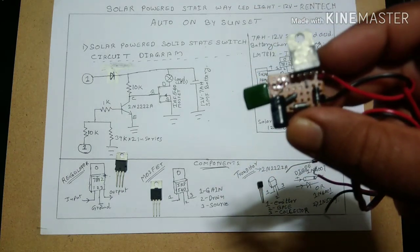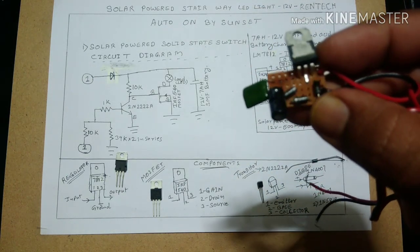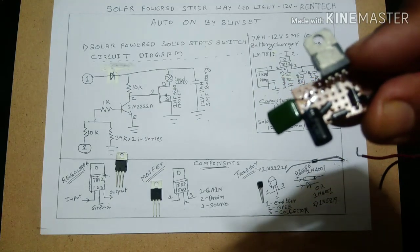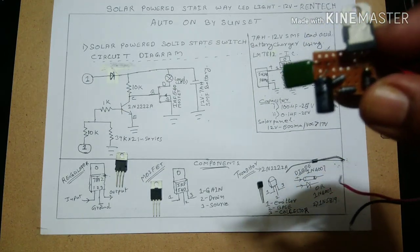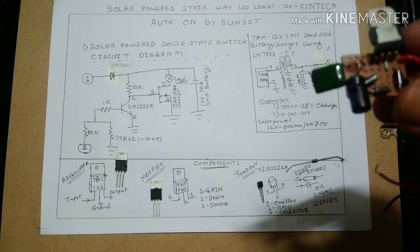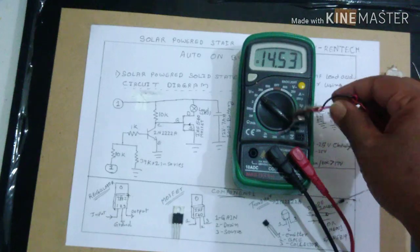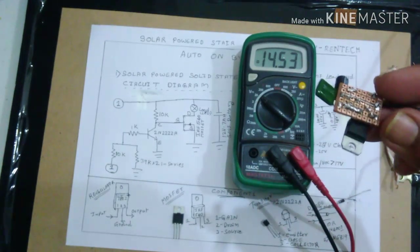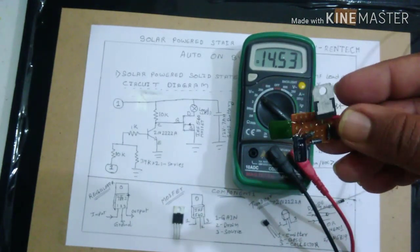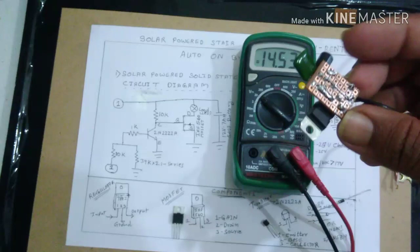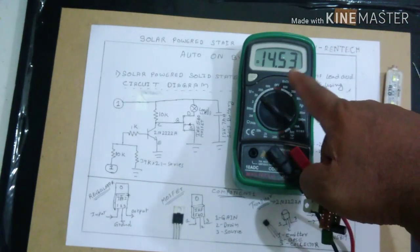As depicted in the diagram, we will be having the three 1N4007 diodes in series configuration out here. I have checked the voltage.